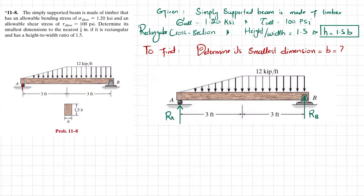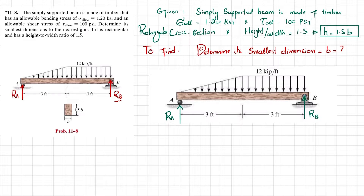To start the solution, we identify the support reactions. Removing the support at A gives reaction force RA, and removing the support at B gives reaction force RB. We find RA and RB using equations of equilibrium.